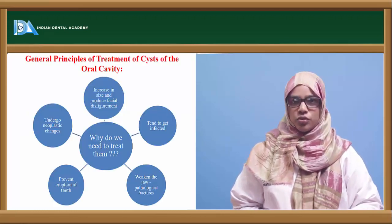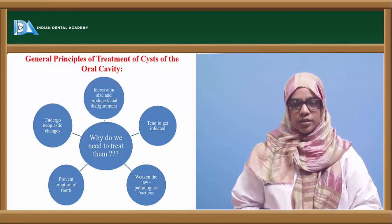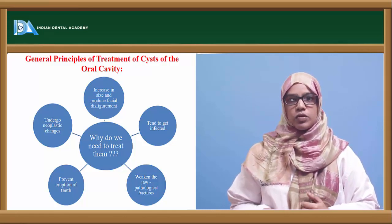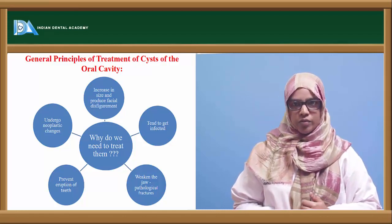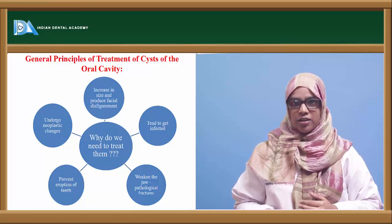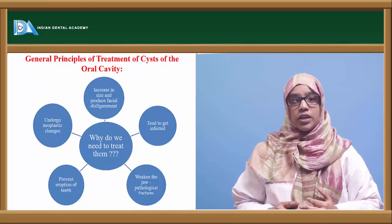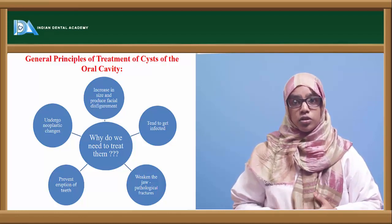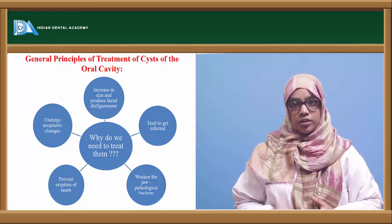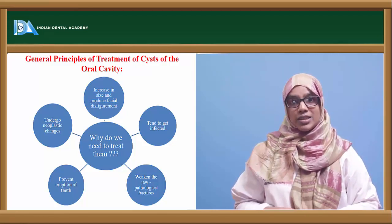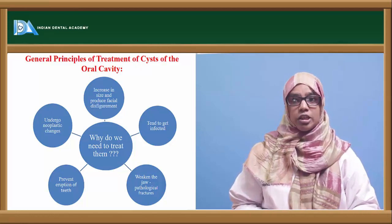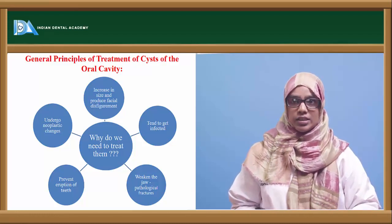Why do we need to treat a cyst? We need to treat cystic lesions because they increase in size and produce facial disfigurement. They tend to get infected again and again and create a lot of problems. They weaken the jaw and result in pathological fractures. They prevent eruption of teeth, and they also undergo neoplastic changes. These are the five main reasons why we need to treat a cystic lesion.